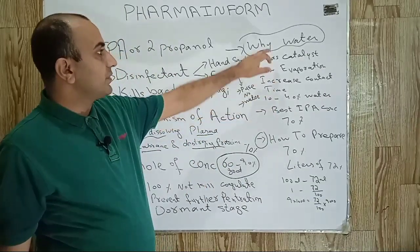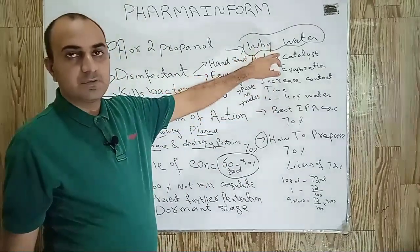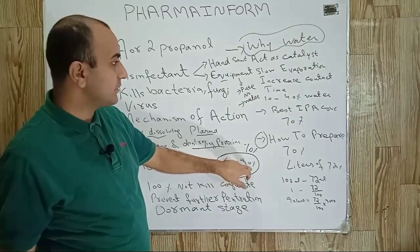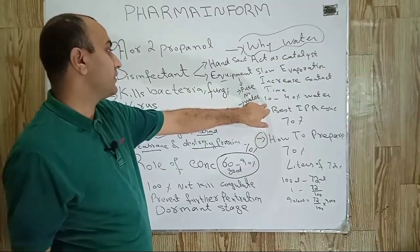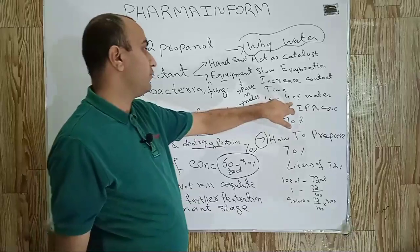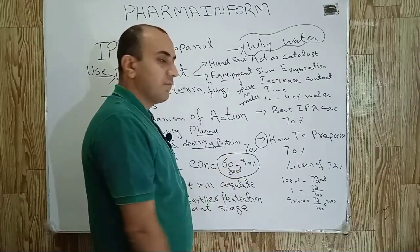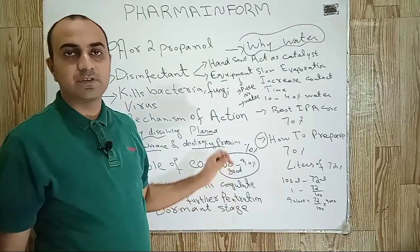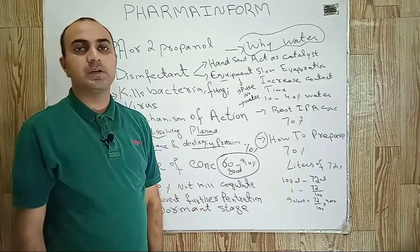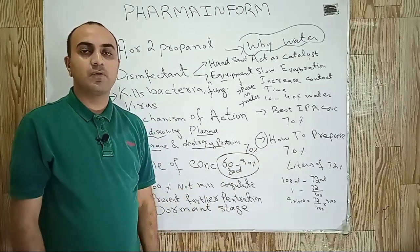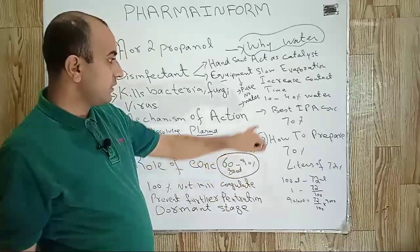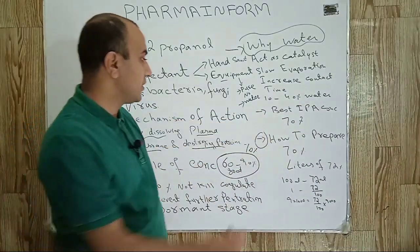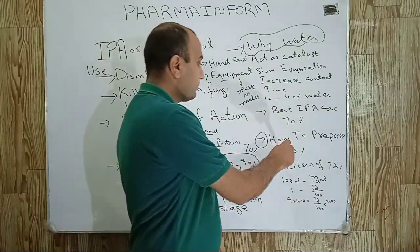How much water concentration is used? If we use IPA in the range of 60% to 90%, it is understood that we can use 10% to 40% water to prepare our 60% to 90% isopropyl alcohol solution.